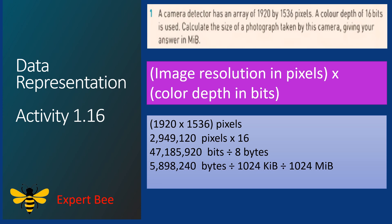We divide by 1024 to convert into kilobytes, then divide by 1024 again to get the answer in megabytes. After dividing, we get 5.625 megabytes.